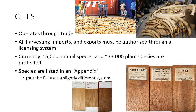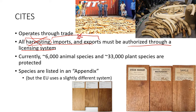CITES operates through trade — they focus on trade of endangered or threatened species. They look at harvesting, imports, and exports, which must be authorized through a licensing system. The harvesting part typically doesn't happen; they're usually just looking at imports and exports. For example, CITES isn't looking at the poachers killing elephants for ivory, but they are confiscating that ivory as it moves through the trade system. Currently about 6,000 animal species and about 33,000 plant species are protected.